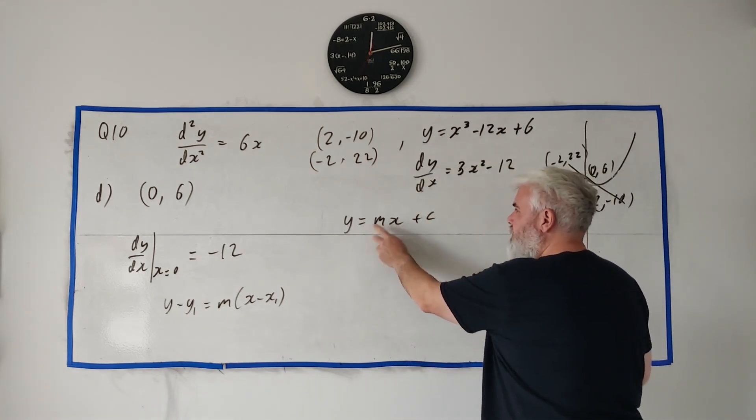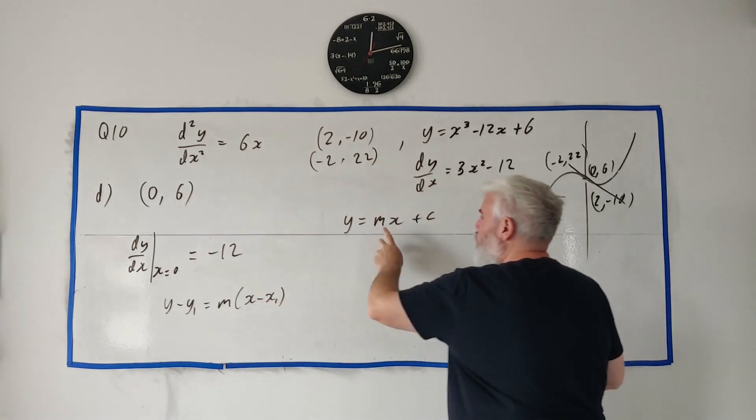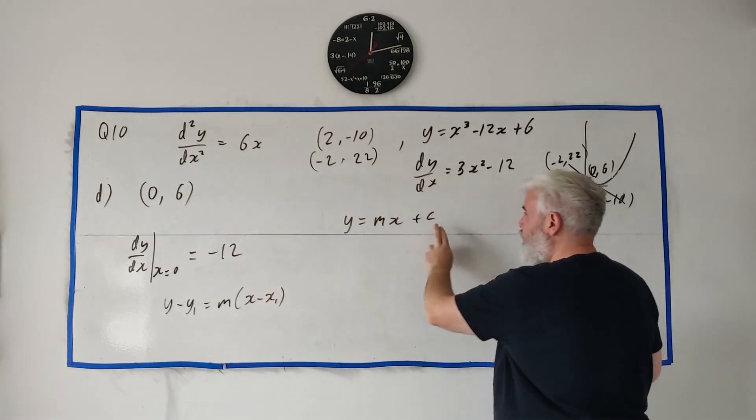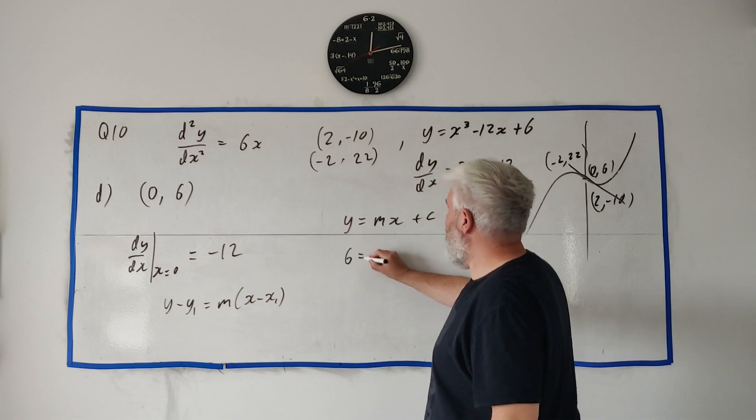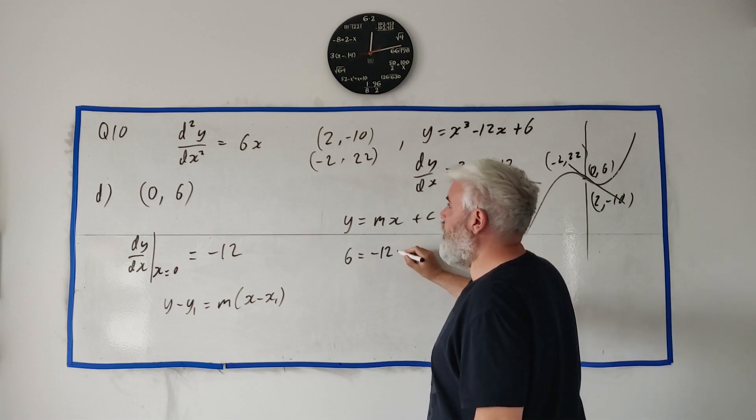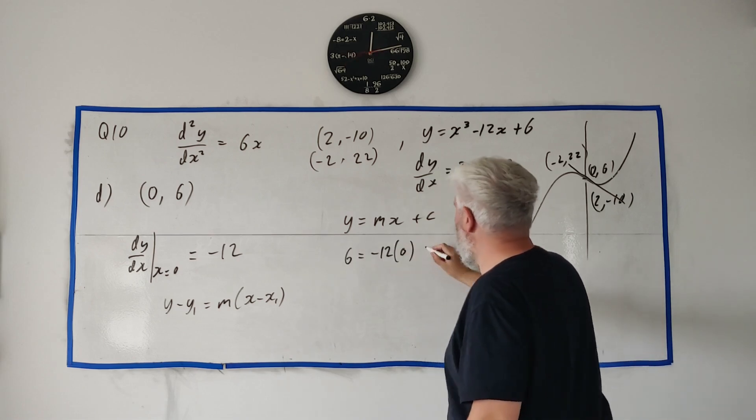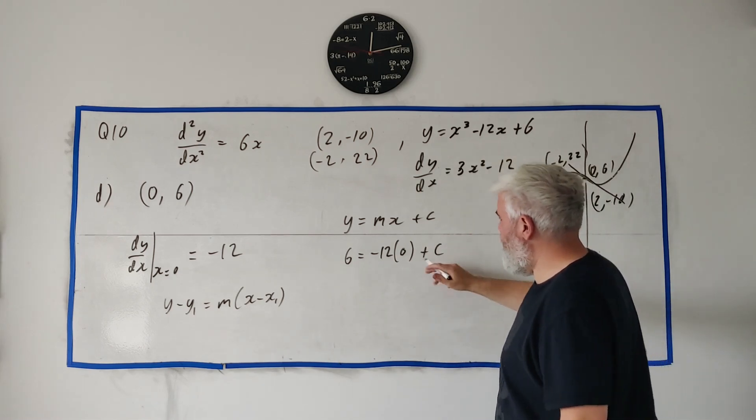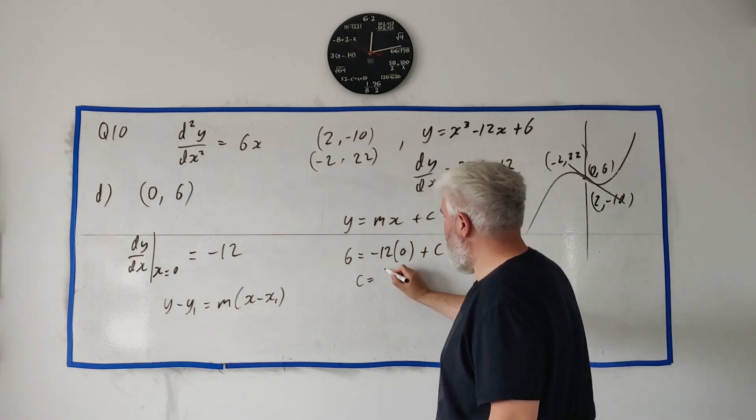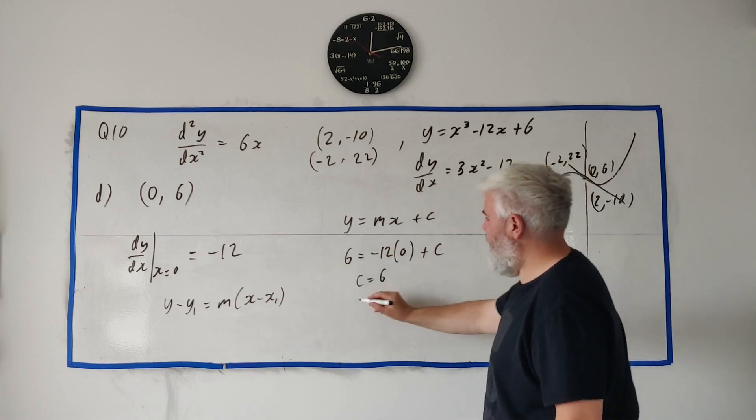You can use this equation or the way I'd rather do it is y is equal to mx plus c. Fill in everything you know and solve for what you don't. We know x and y, we know m. We don't know c. So let's fill in everything else. We've got 6 is equal to minus 12 times 0 plus c. So that means that's gone. c is equal to 6. So we just write it out again.